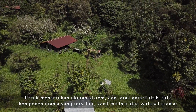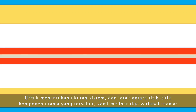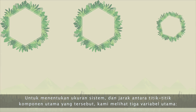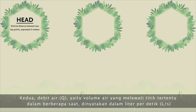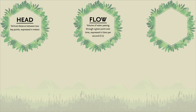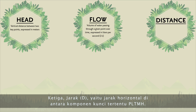To determine the system size and distance between key points during a feasibility study, we are looking at three key variables. First, we're looking at head, which is the vertical distance between two key points expressed in meters. Second, we're looking at flow, which is the volume of water passing through a given point over time, expressed in liters per second. Third, distance, which is the horizontal distance between certain key components of the microhydro system.